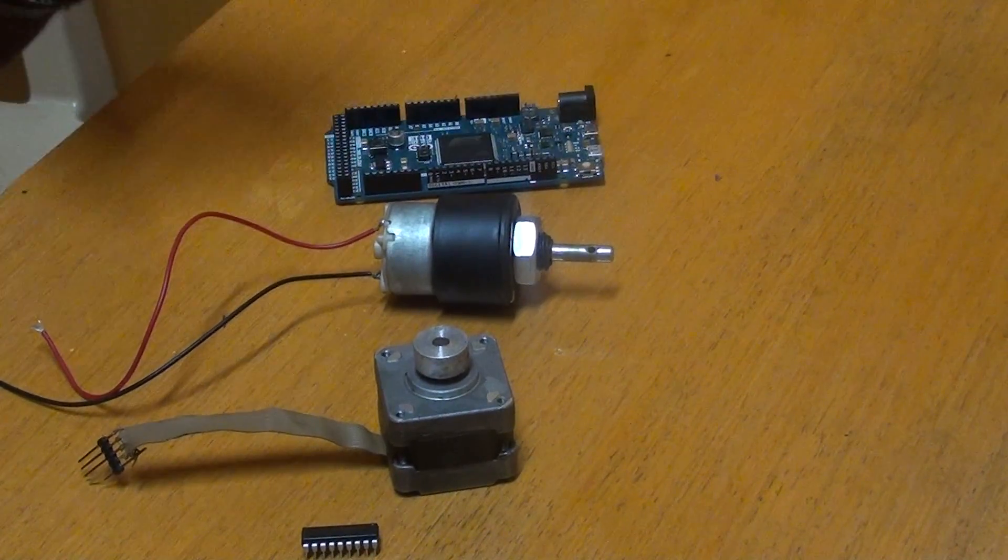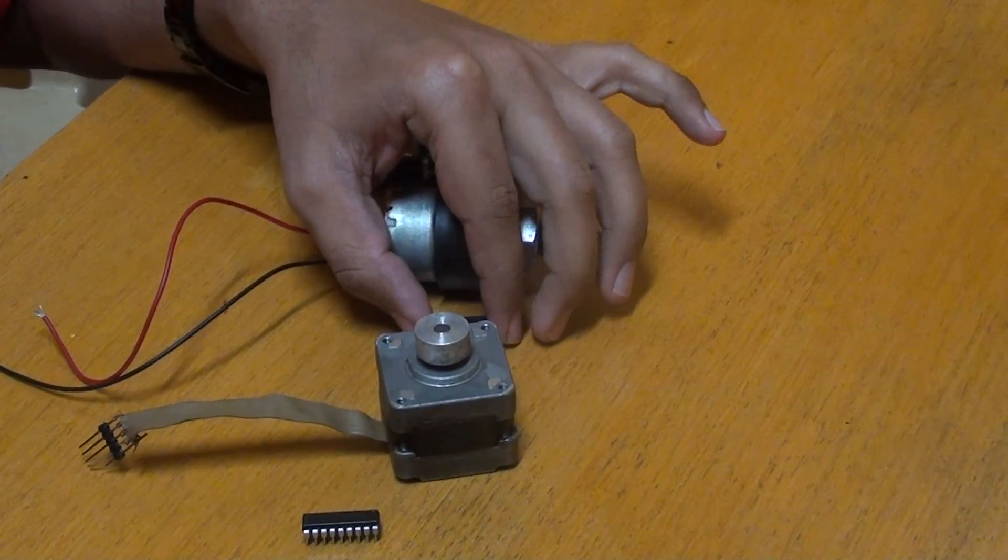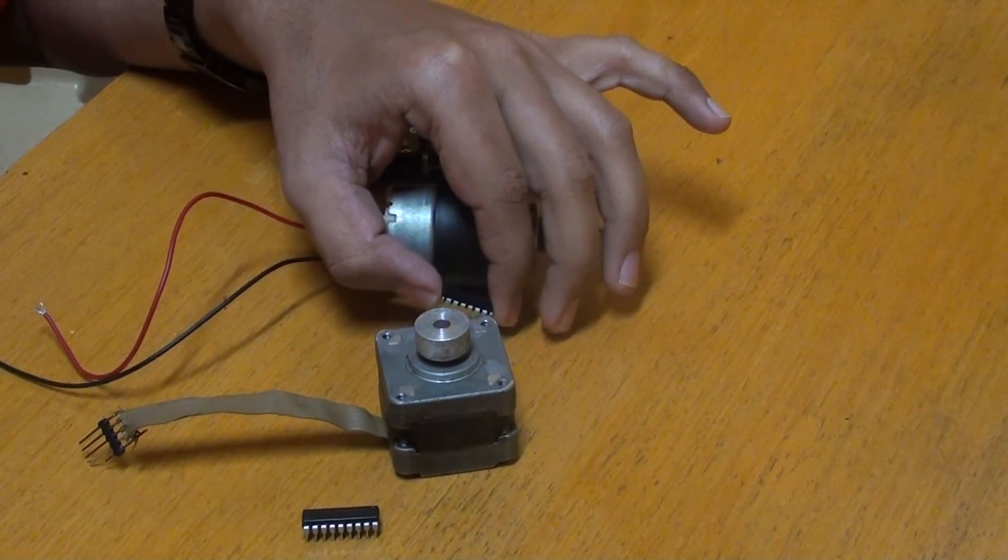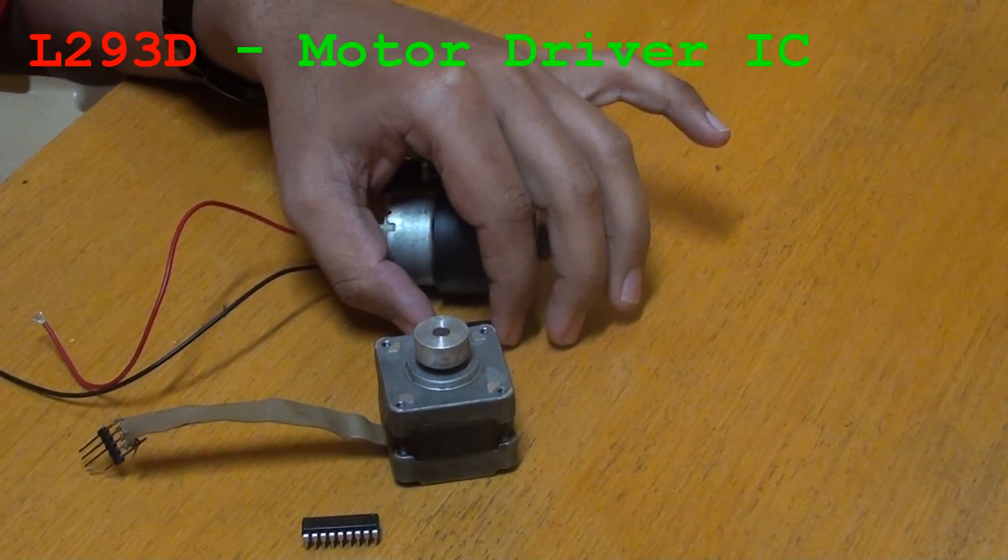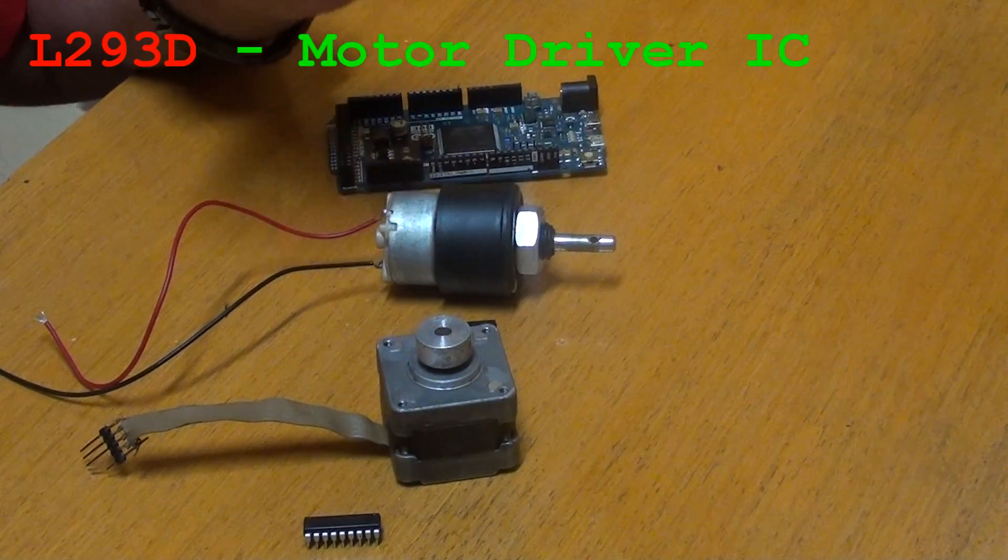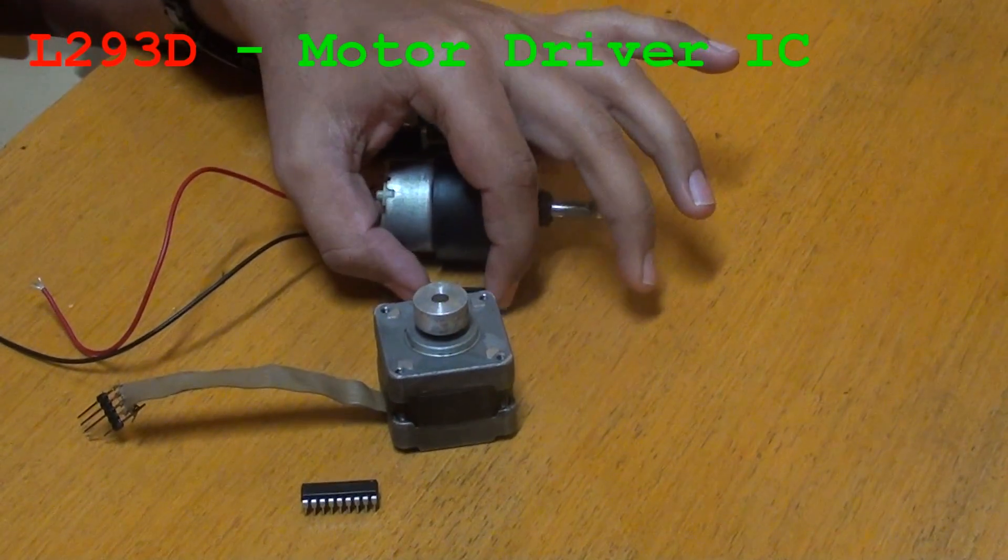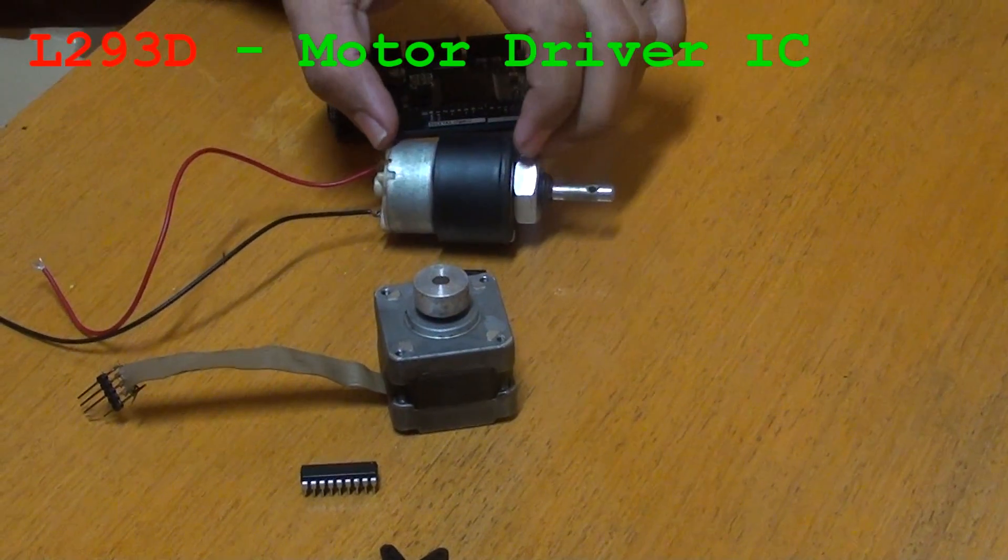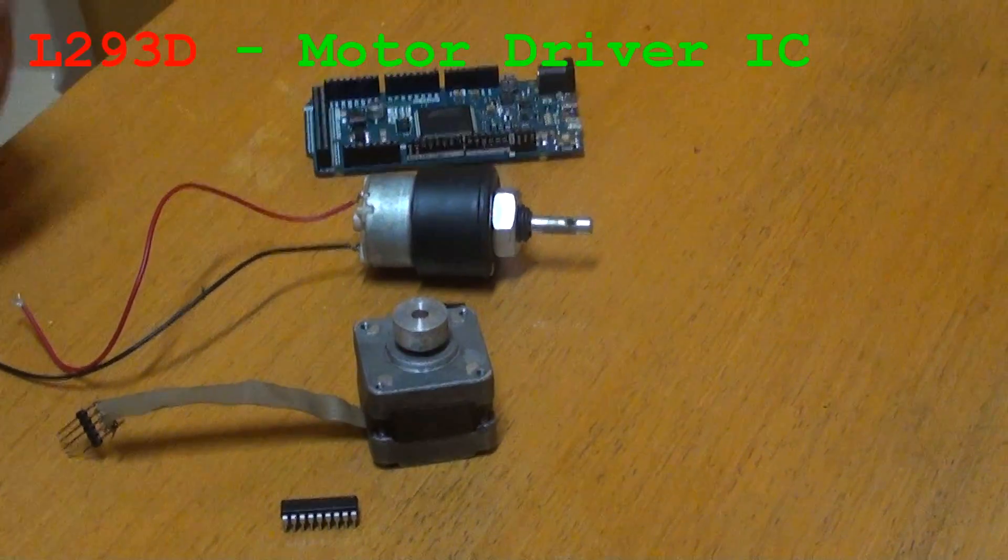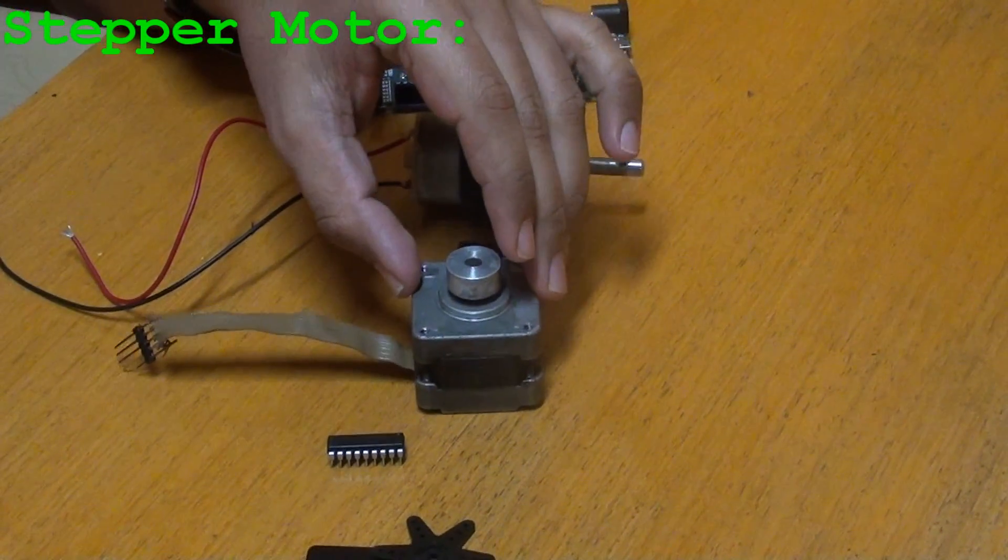For this reason, we have an IC called the L293D driver IC, which we use to run the motor in both directions. This enhances the power supply that is required to drive this DC motor.